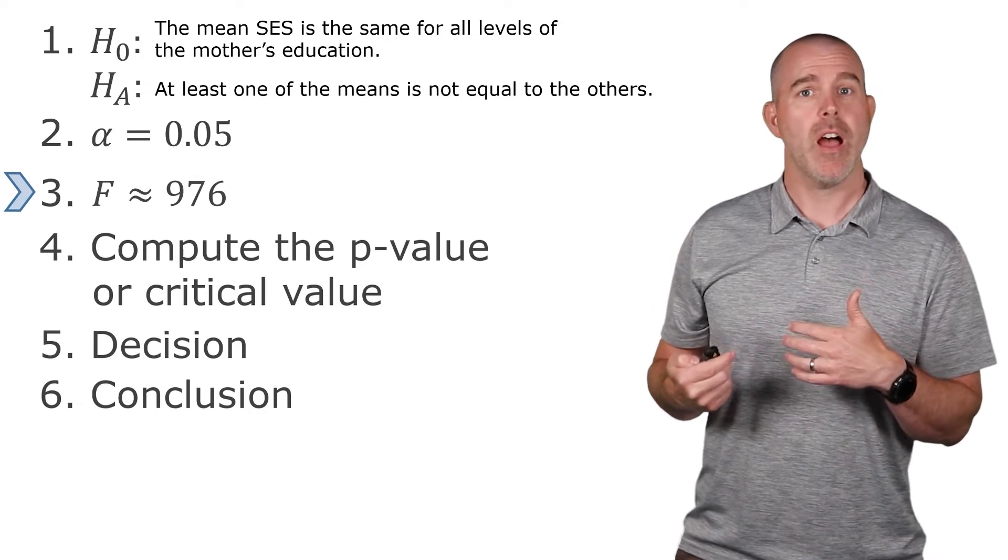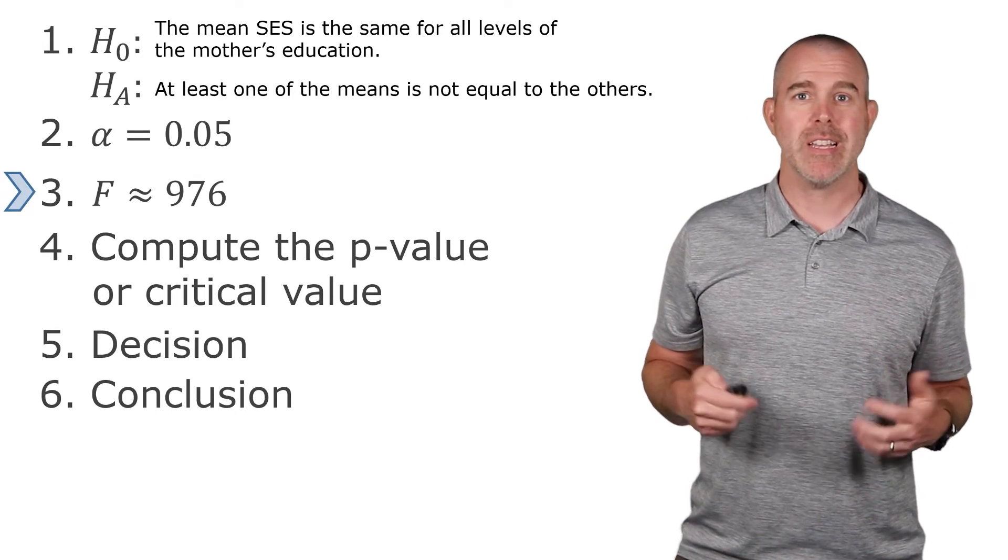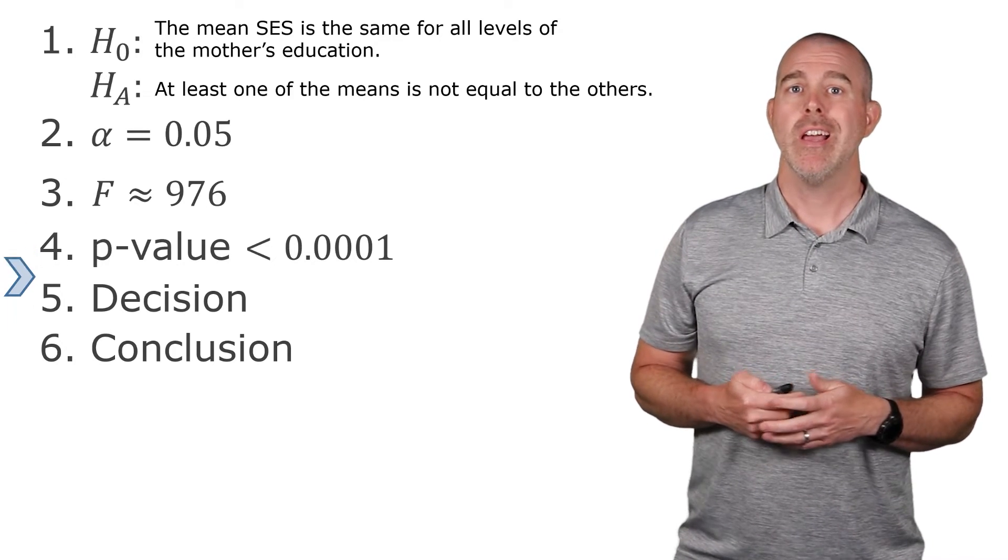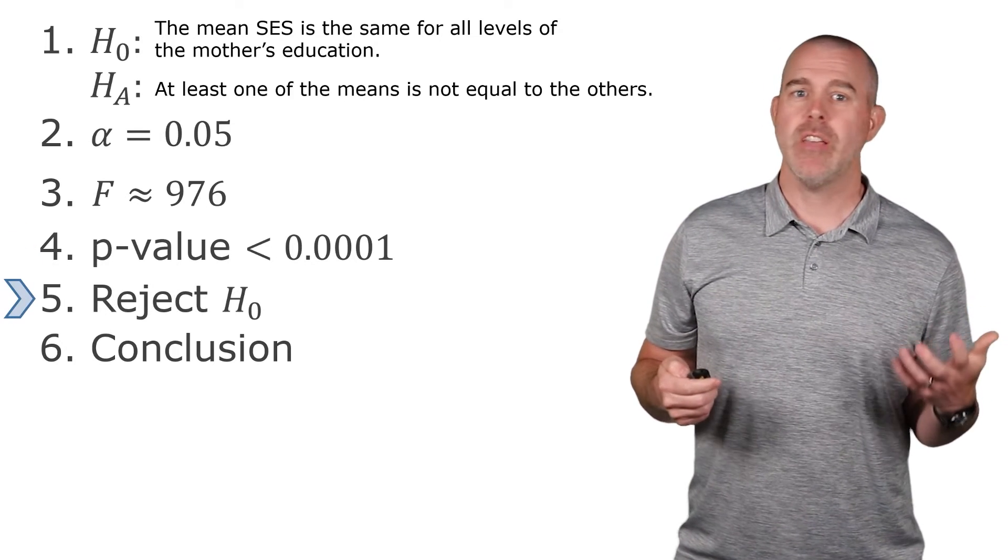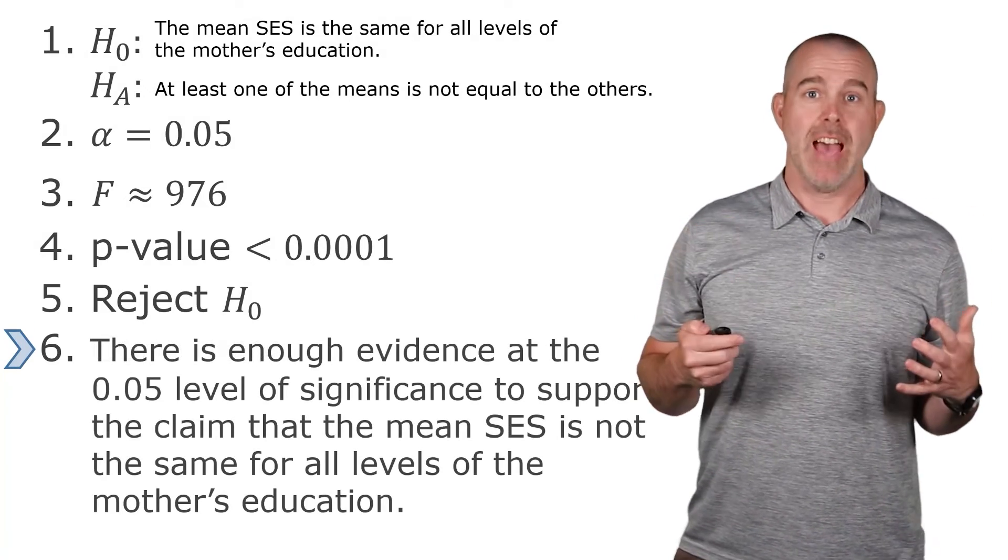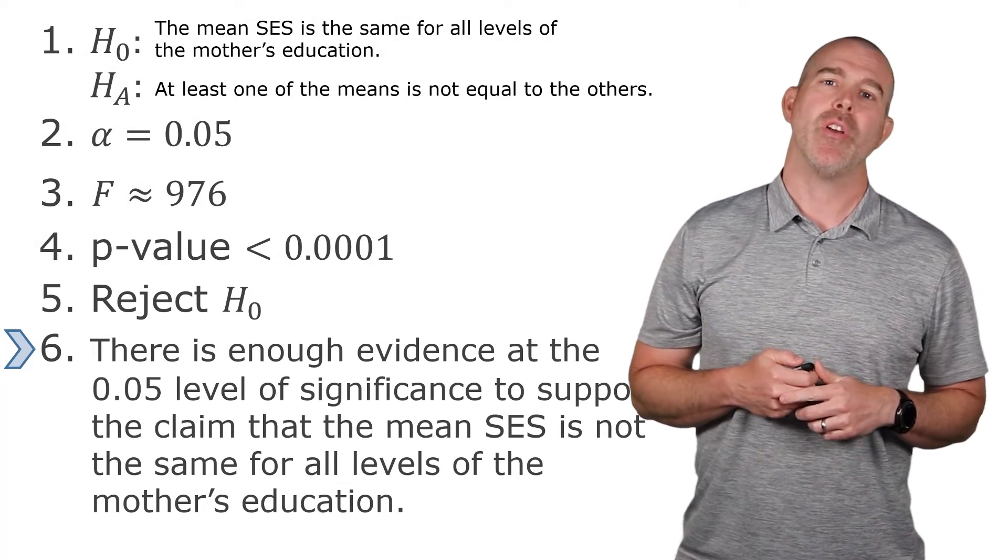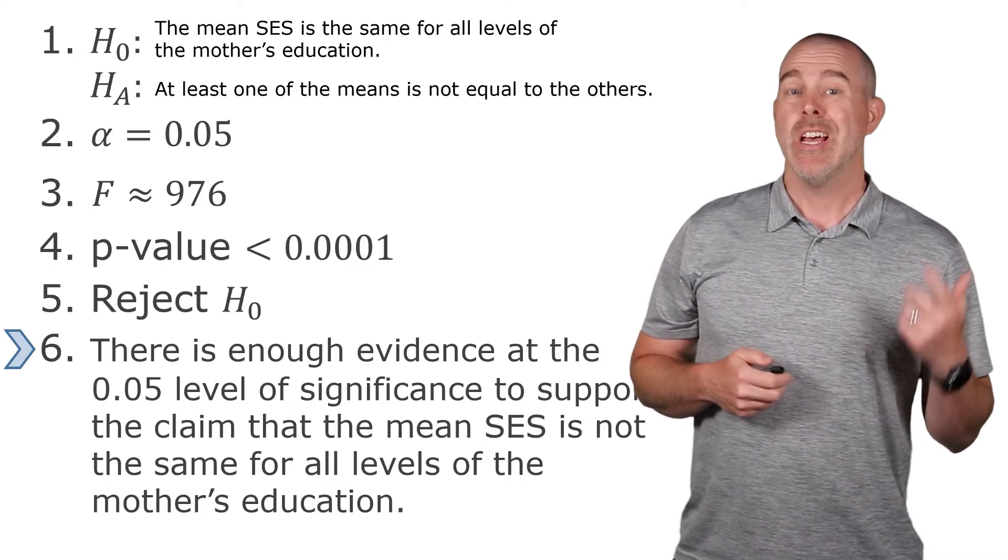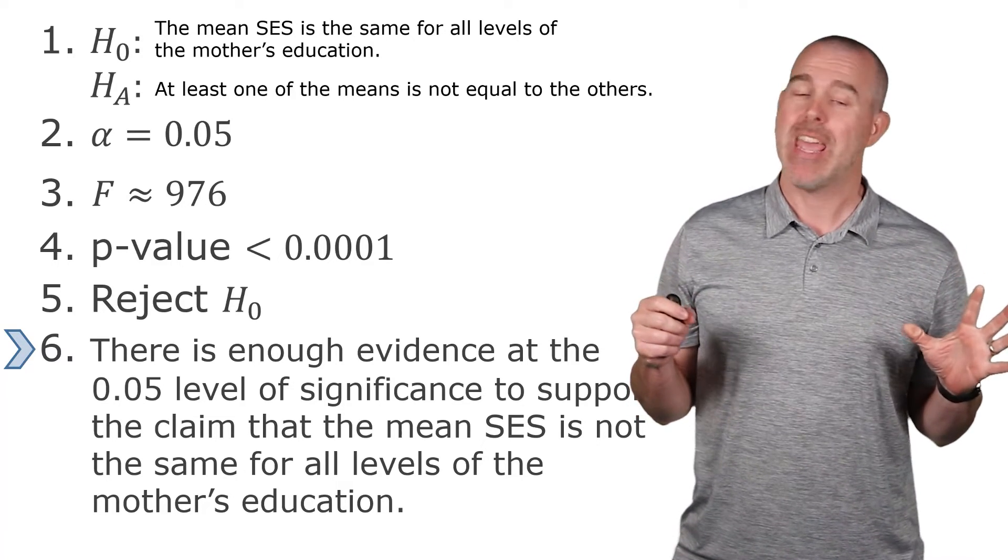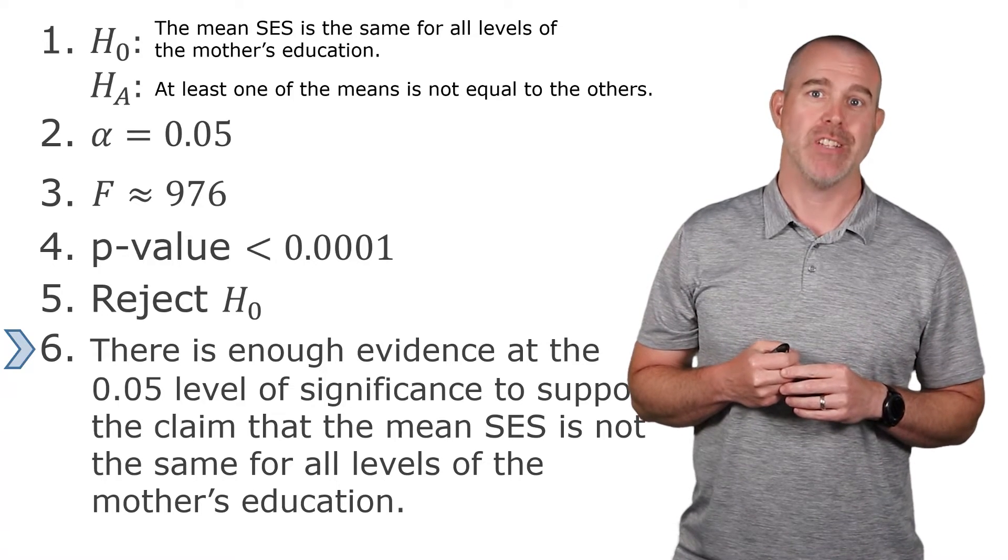So our F statistic, very large, about 976. P-value, very small, less than 0.0001. When we make our decision, we'll reject the null hypothesis. And so our conclusion is, yes, there is enough evidence at the 0.05 level of significance to support the claim that the mean socioeconomic status is not the same for all levels of mother's education.